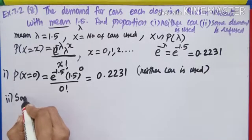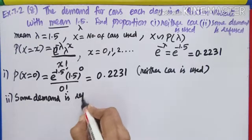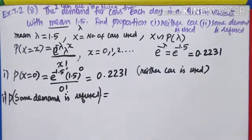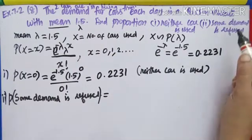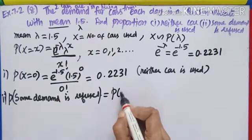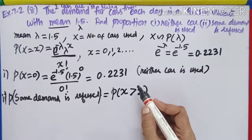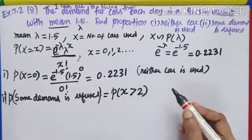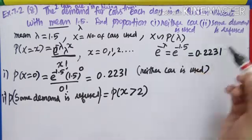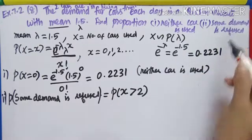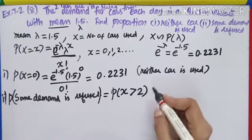Second part: 'some demand refused'. What does 'some demand refused' mean? The firm has 2 cars. Some demand is refused implies that more than 2 cars are requested. If a person comes and claims no car, one car, or two cars, the firm can provide them. But if more than two are demanded, the firm has to refuse. So 'some demand is refused' means P(X > 2).